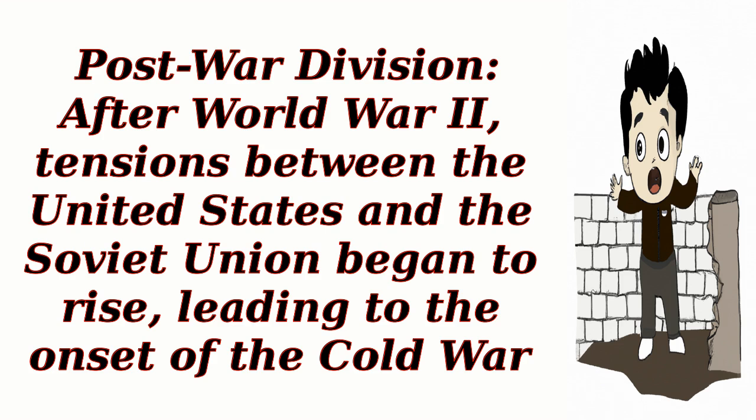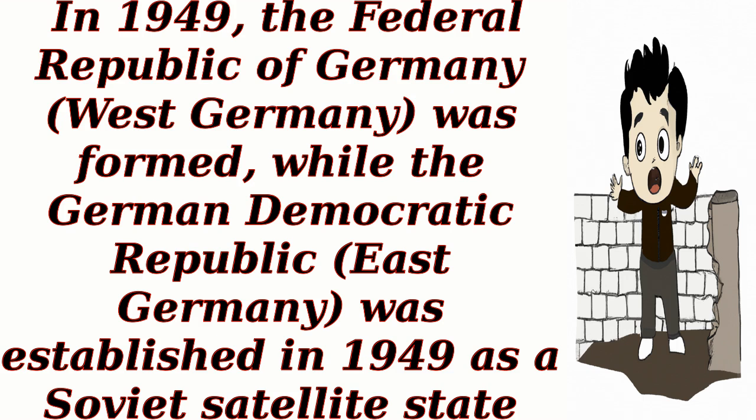Post-war division: After World War II, tensions between the United States and the Soviet Union began to rise, leading to the onset of the Cold War. In 1949, the Federal Republic of Germany (West Germany) was formed, while the German Democratic Republic (East Germany) was established in 1949 as a Soviet satellite state.